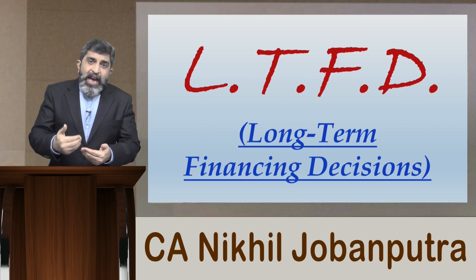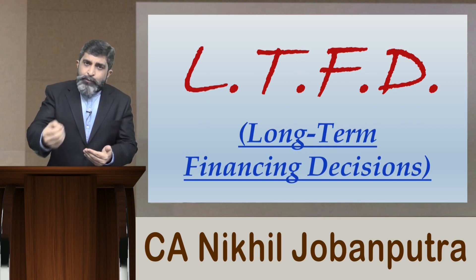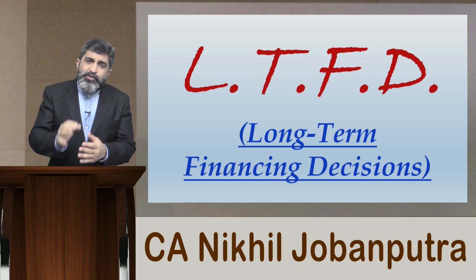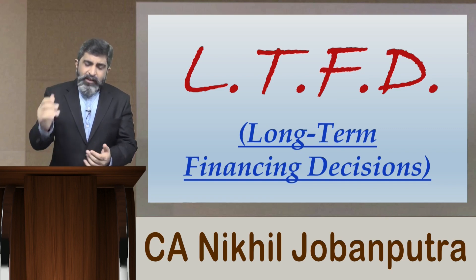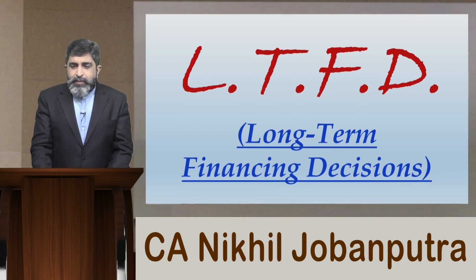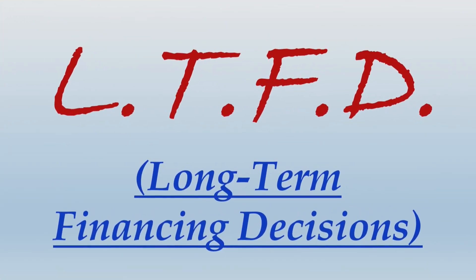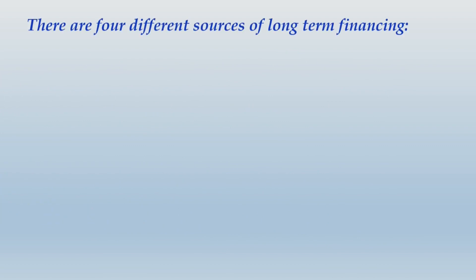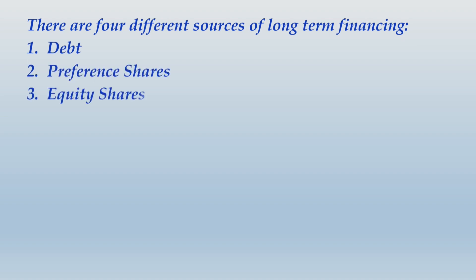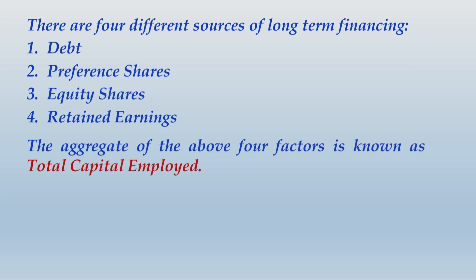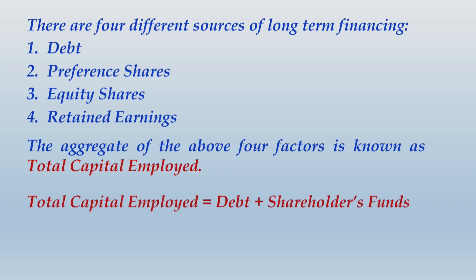When writing notes, if I don't give sufficient time, please pause the video, write down the notes, and then resume. Under the heading long-term financing decisions, write that there are four different sources: debt, preference shares, equity shares, and retained earnings. The aggregate of these four is known as total capital employed, which equals debt plus shareholders funds.